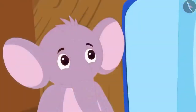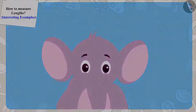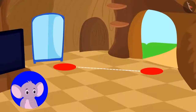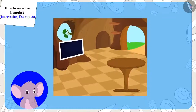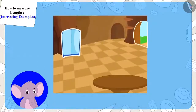Appu understood Chanda's mistake. But how can we correct this mistake? Appu said to Chanda that whenever she has to tell somebody the distance from one place to another, she can use the count of the tiles on the floor. Like, her TV is four tiles away from the table, and her blue cupboard is eight tiles away from the door.